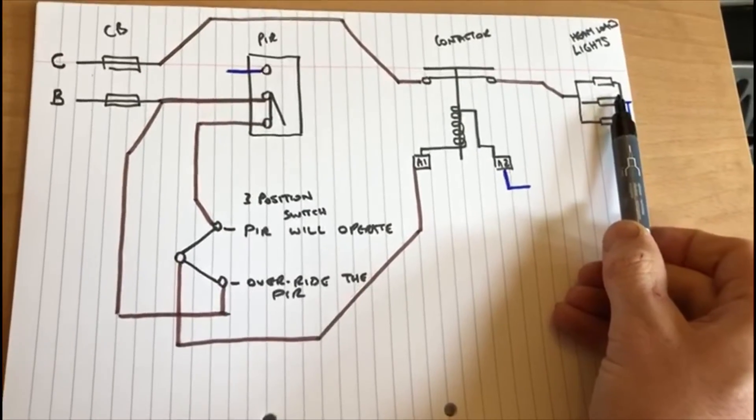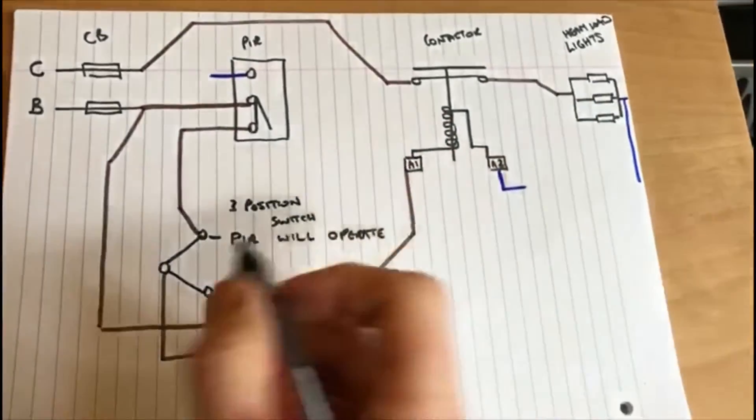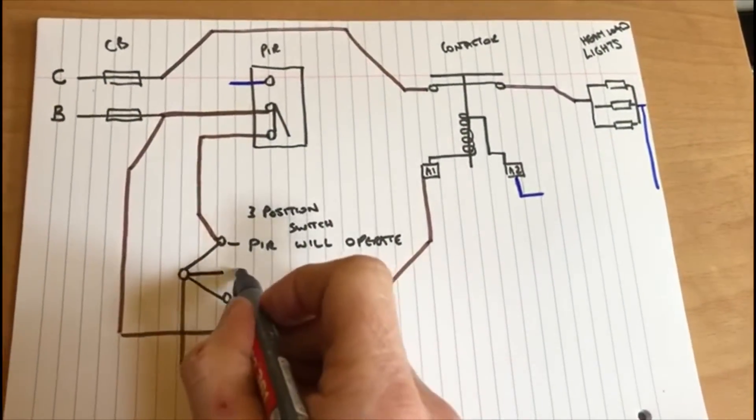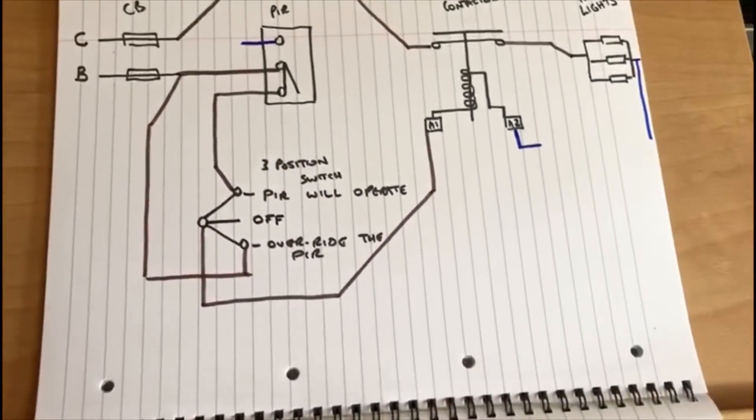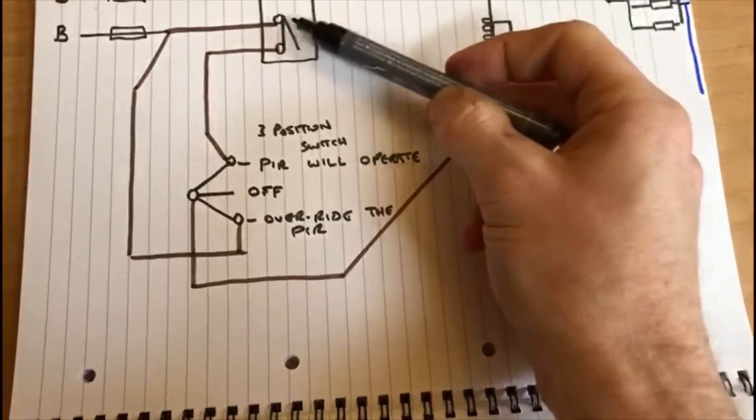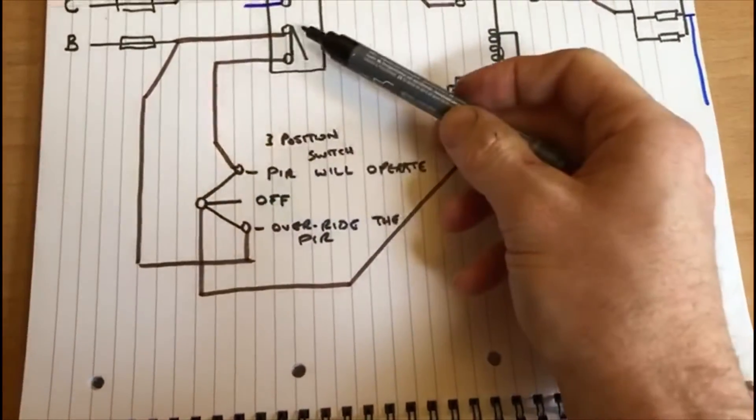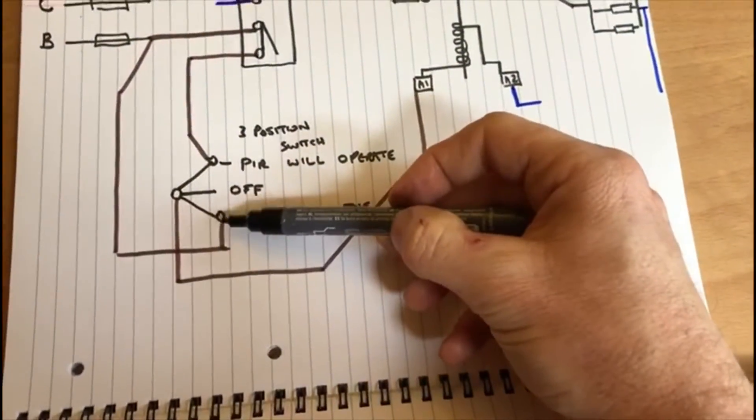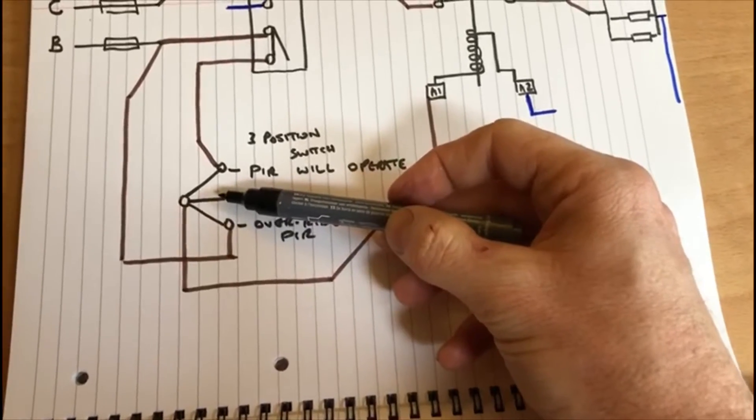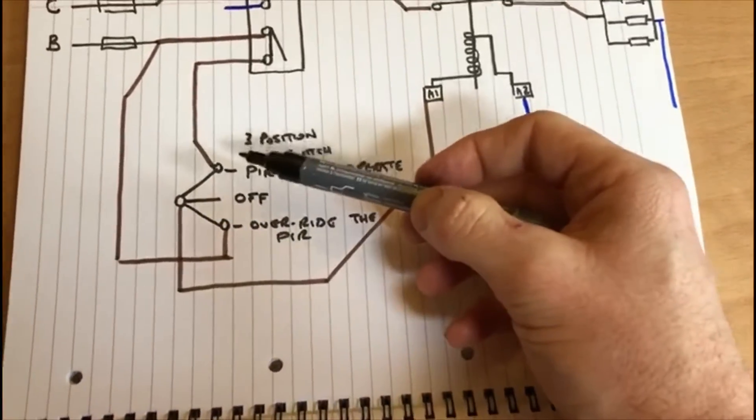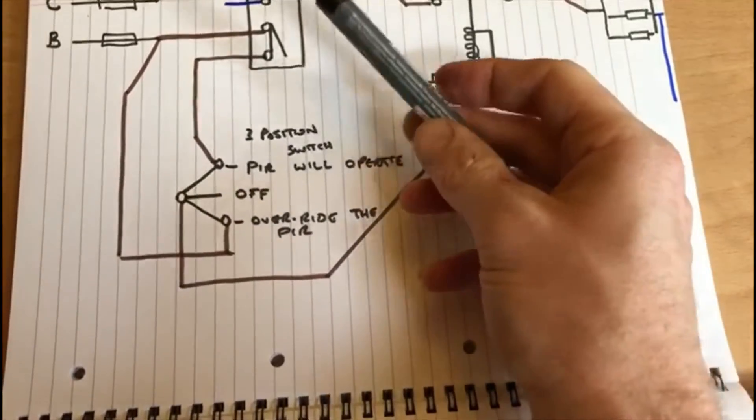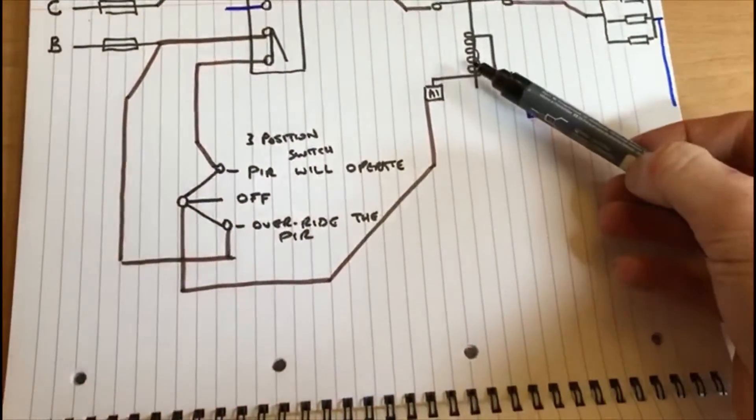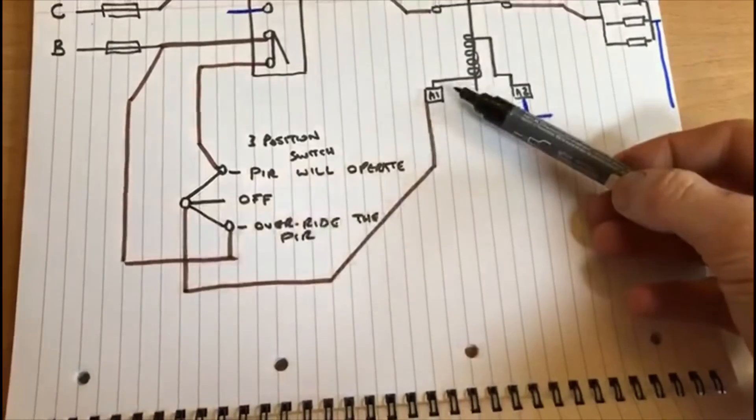Finally we have our off position and in this case the PIR will still operate but there is no connection and there is no live feed going on there. So in this position, in the off position, the PIR will not operate the coil and neither will the coil operate because there's no live feed going to it.